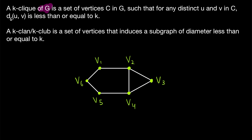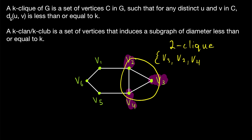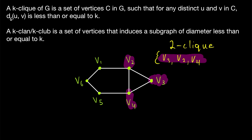Recall that a K-clique of a graph G is a set of vertices C in G such that any distinct vertices U and V in the K-clique have a distance less than or equal to K. So if we look at this graph, what would an example of a two-clique be? Suppose we start making our two-clique with the vertex V3. We could also include the vertices V2 and V4 because these three vertices make up a complete subgraph, so they definitely all have a distance less than or equal to two between each other. So this is an example of a two-clique.